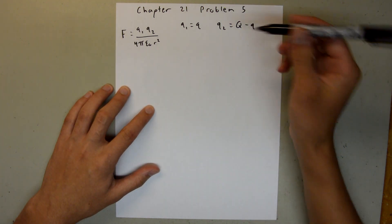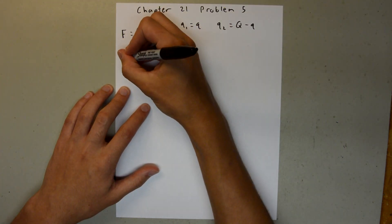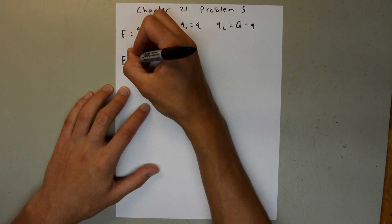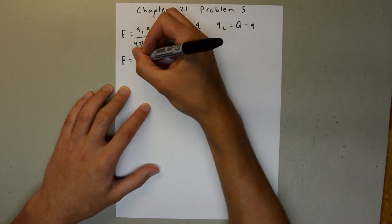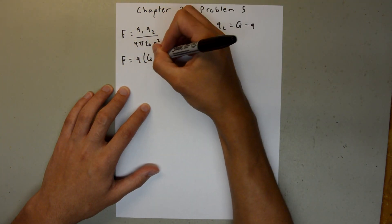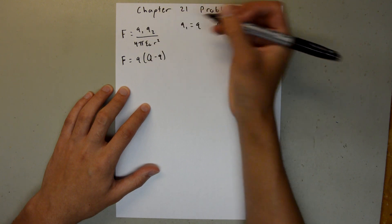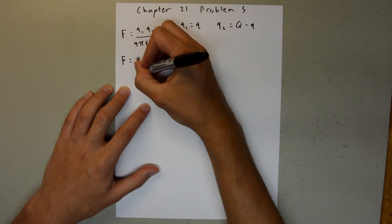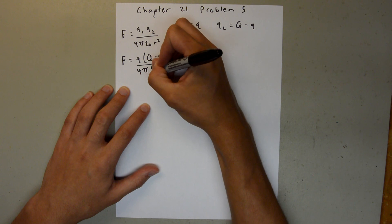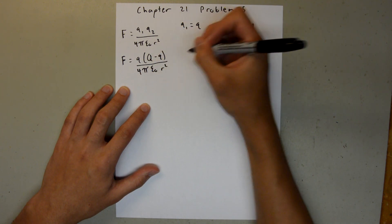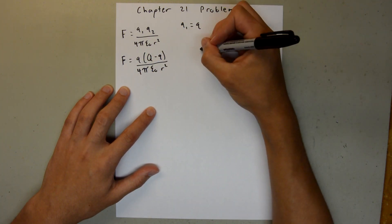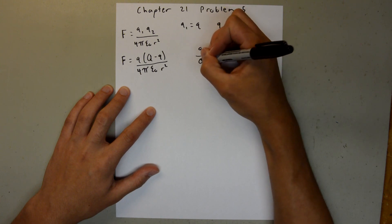And so, we can plug these into our equation. F is equal to q times big Q minus q over 4 pi epsilon sub 0 r squared. And we're trying to find the ratio of little q to big Q.